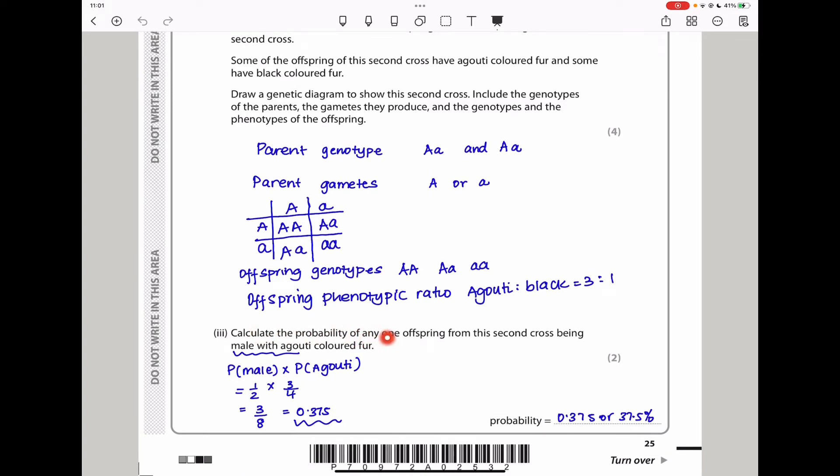Next, they say calculate the probability of any one offspring from this second cross being male with agouti colored fur. For this case, I had to calculate the probability of male times the probability of agouti. We know for any parent, probability of having a male is 1 over 2 because there is a 1 in 2 chance of having a male or 1 in 2 chance of having a female. Also, for agouti, since we have seen they are 3 out of the total, that is 4, so it's going to be 3 over 4. When you multiply like this, you get 3 over 8, which is the same as 37.5%.